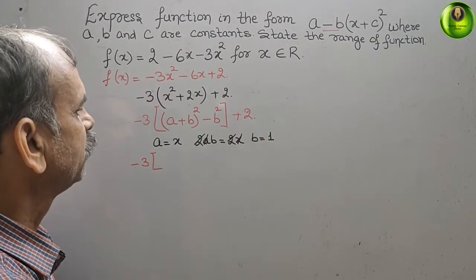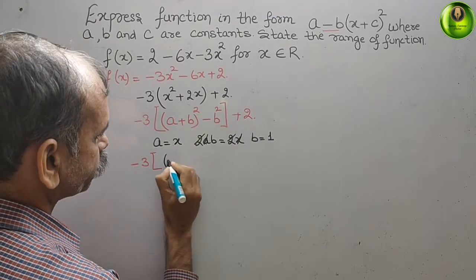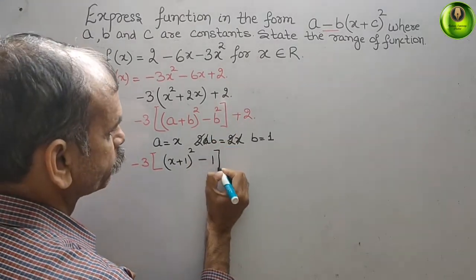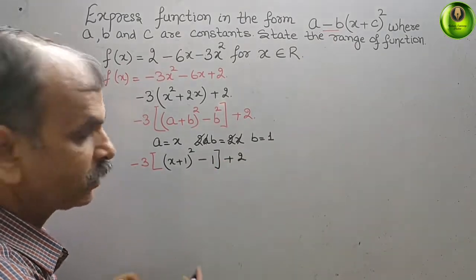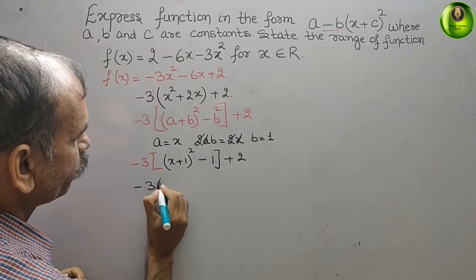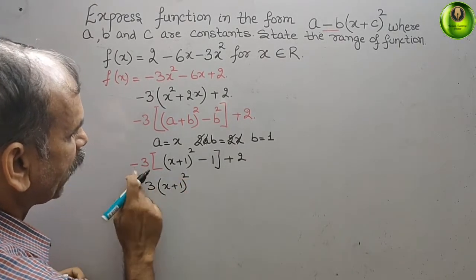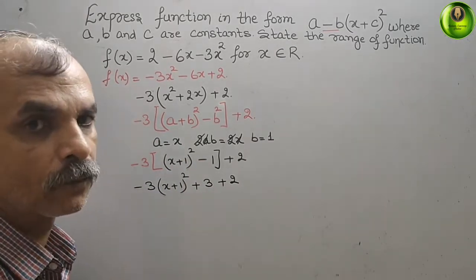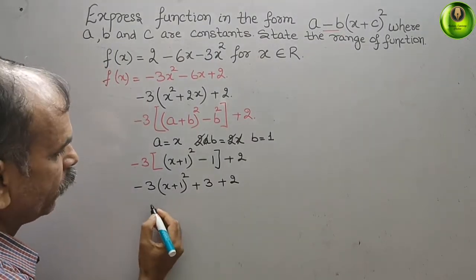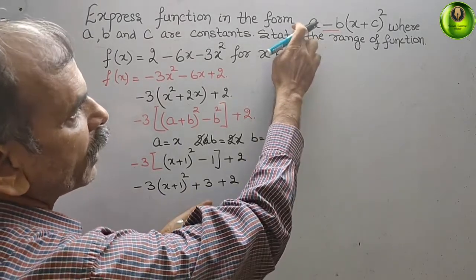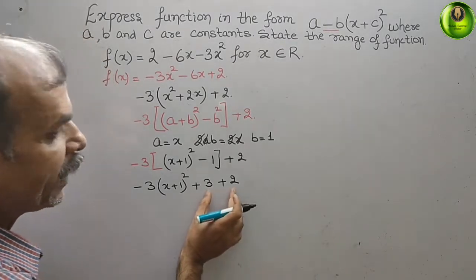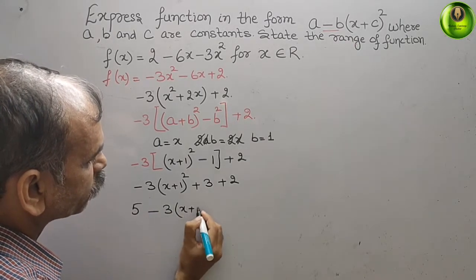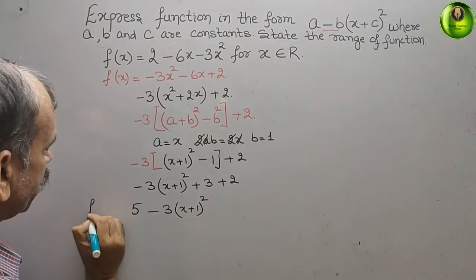Substituting, it becomes minus 3 times (x plus 1) whole square minus 1, plus 2. Opening the bracket: minus 3 times (x plus 1) whole square, and minus into minus gives plus 3, plus 2. Solving this gives f(x) equal to 5 minus 3(x plus 1) whole square.